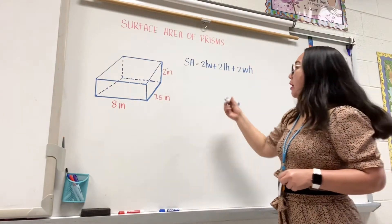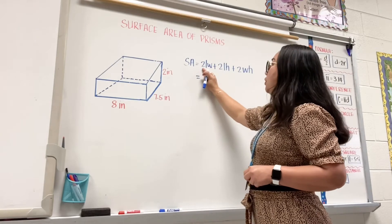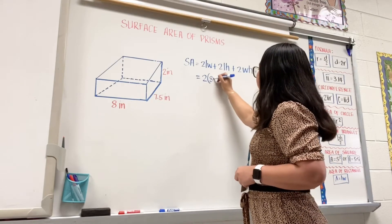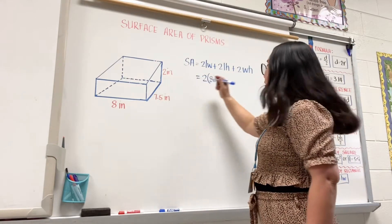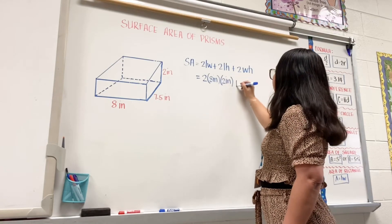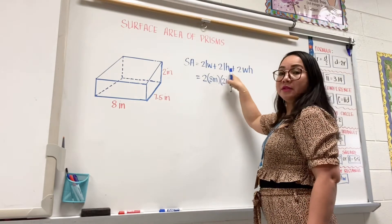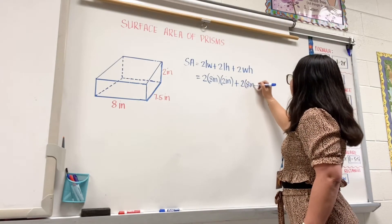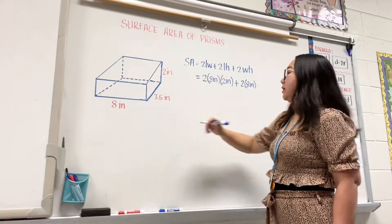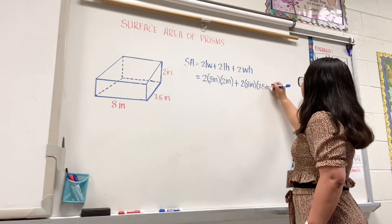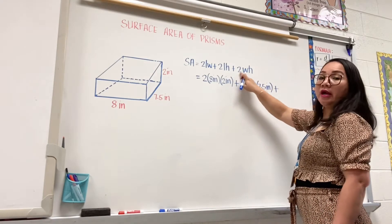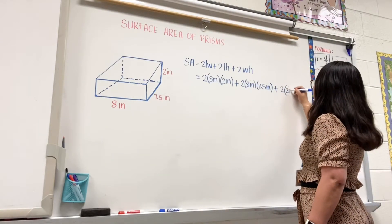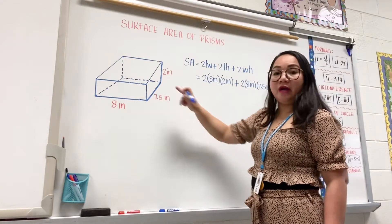The first part is two times length times width: that is two times eight inches times two inches. Plus two times length times height: two times eight inches times seven and five-tenths inches. Plus two times width times height: two times two inches times seven and five-tenths inches.